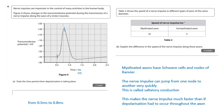Table 2 shows how the speed of nerve impulses in different types of axons of the same diameter. So, you've got your myelinated axon and your unmyelinated axon. So, the myelinated one has got a sheath on the outside. And you will see that the impulses are a lot faster if you've got a myelin sheath.